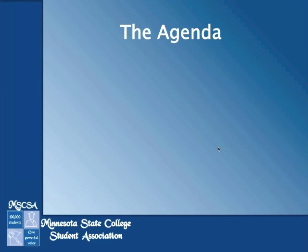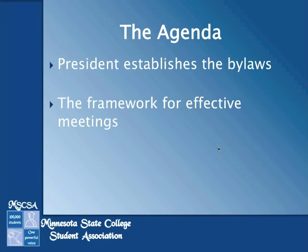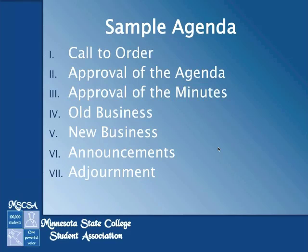As far as the agenda goes, it can be pretty simple. It's generally the president of the Senate, chair of the meeting, or the club who establishes the agenda, and it provides the framework for an effective meeting. Here's a sample agenda. The first thing that should happen is the chair calls the meeting to order, then you allow for an approval of the agenda. At this time, if there are any additions, changes, or spelling errors that need to be corrected, that's when it would occur.